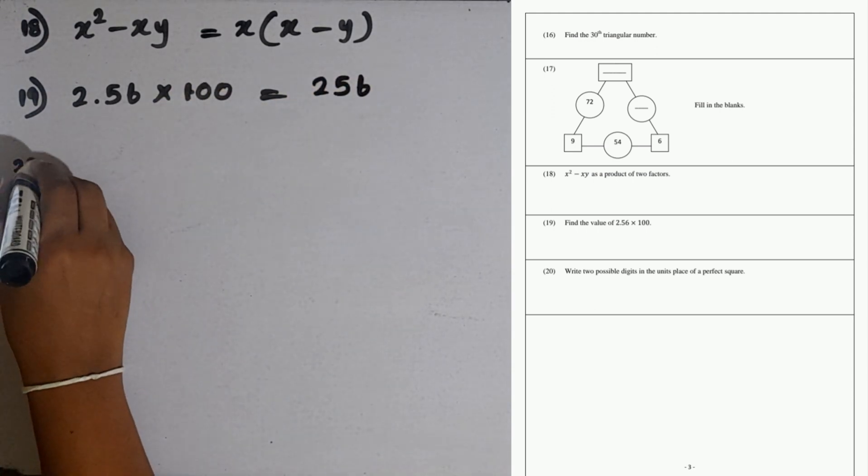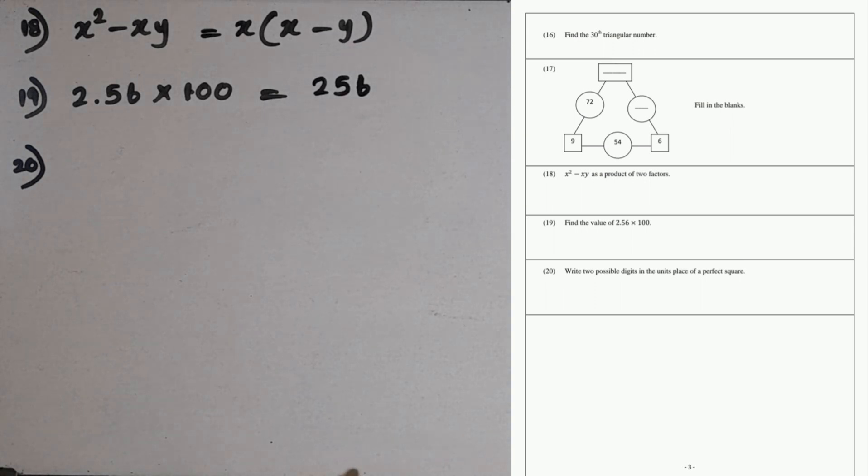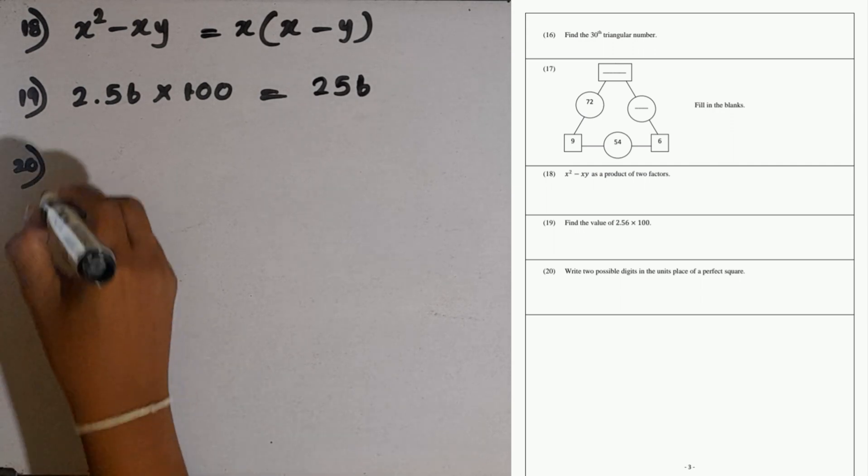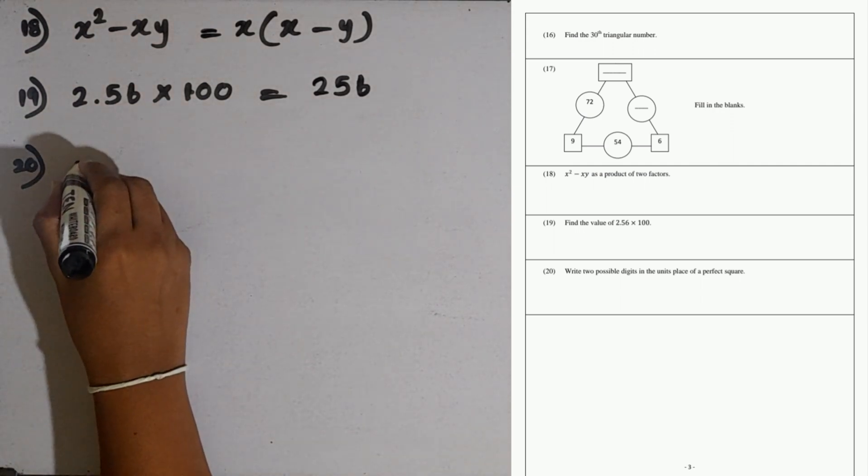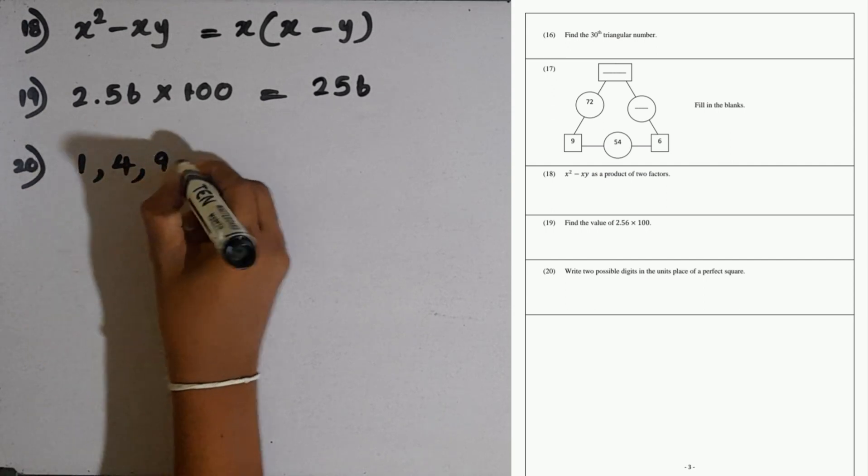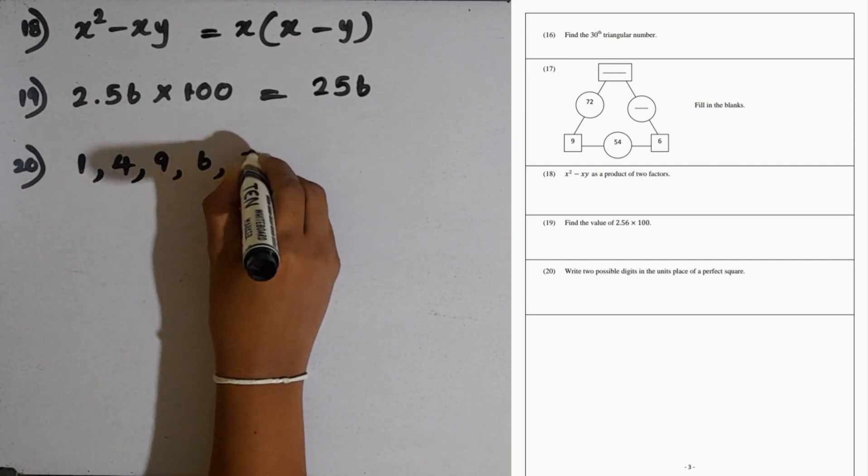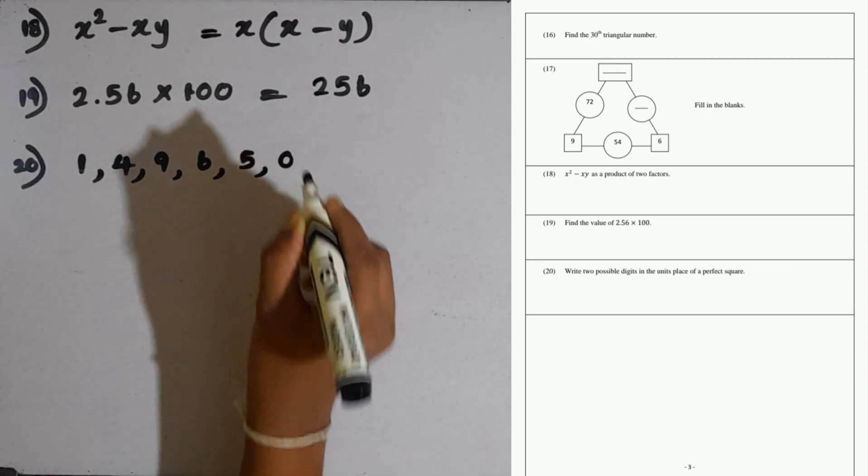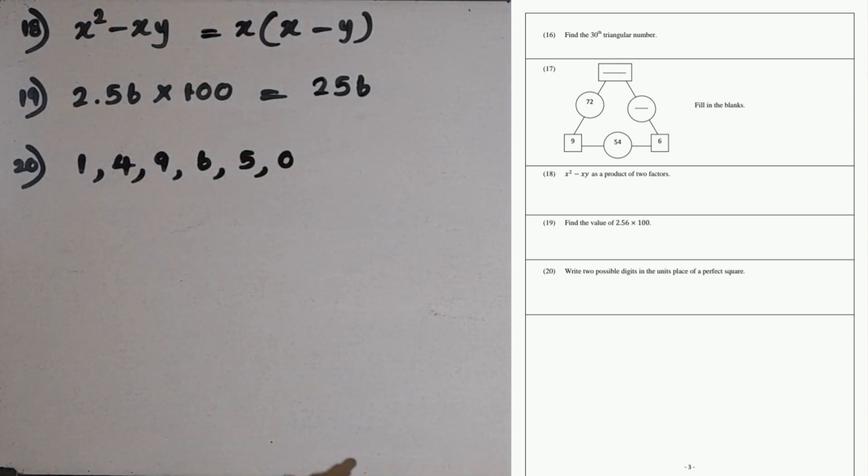Question number 20: write two possible digits in the unit place of a perfect square. In a perfect square we can have these digits: 1, 4, 9, 6, 5, and 0. You can write two of them.